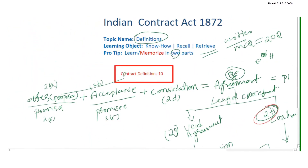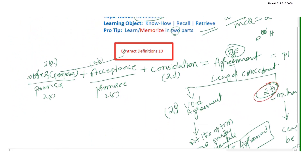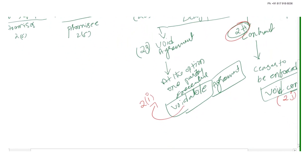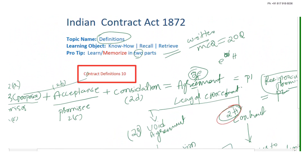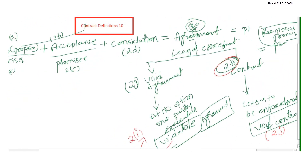To summarize: the Contract Act word definitions flow as — Offer, Acceptance, Consideration, Agreement, Promise, Agreement, Contract, one party executable contract, subsequent action void contract. Use both a diagram format and a descriptive format together to make full marks.